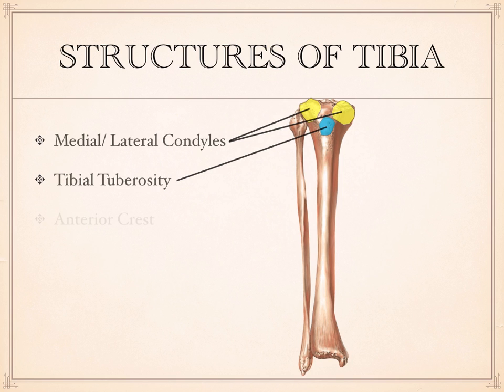Going distal to the tuberosity, the shaft of the bone has a very sharp edge in the front, known as the anterior crest of the tibia. In everyday language, people typically call this their shin. It's not uncommon to bang this against something — it's just skin and bone right here. Soccer players wear shin guards that cover this anterior crest to protect it from damage.